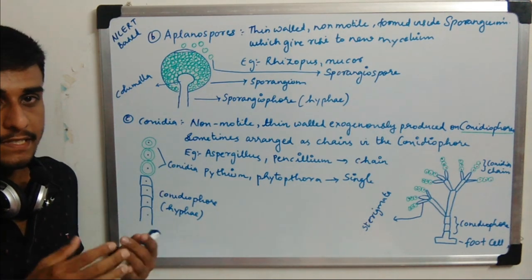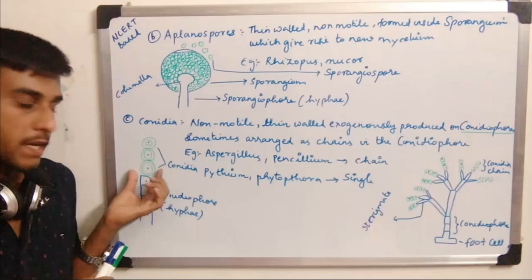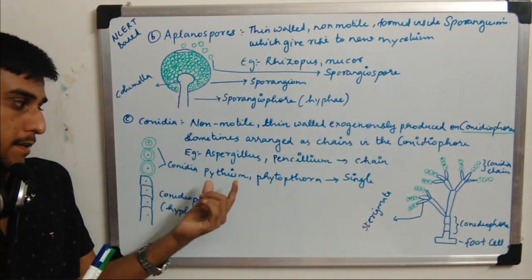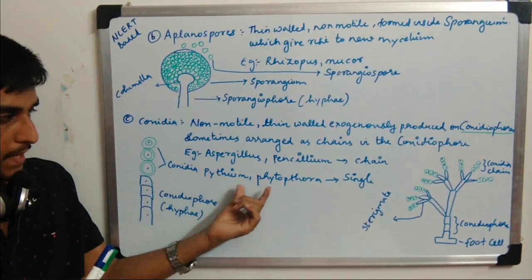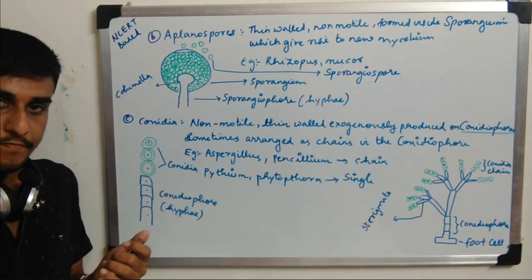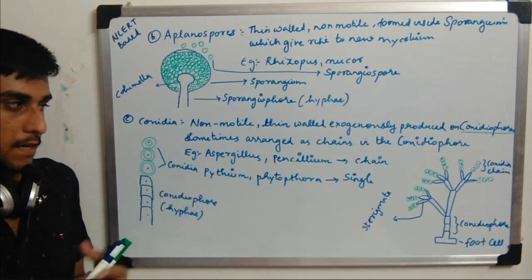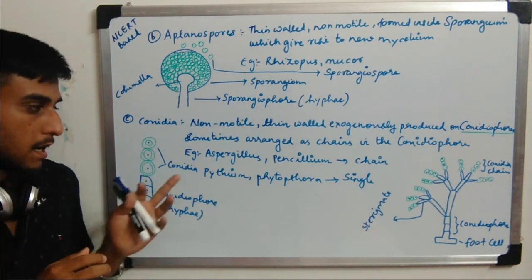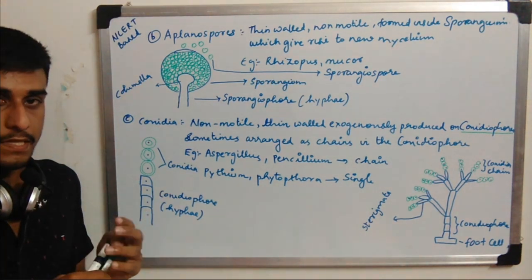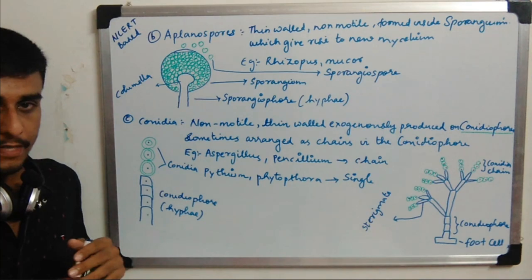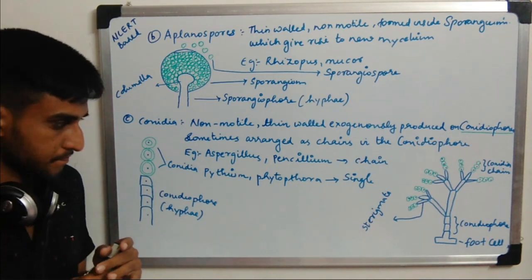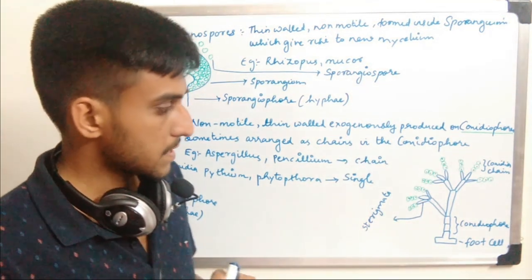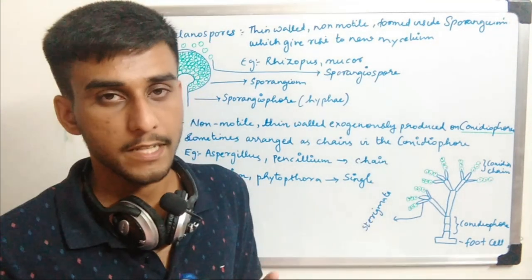Single conidia are seen in Pythium and Phytophthora fungi, and conidia in chains are seen in Aspergillus and Penicillium fungi. These examples should be memorized. Conidia can also be seen in a branched structure.